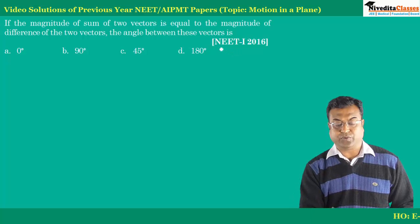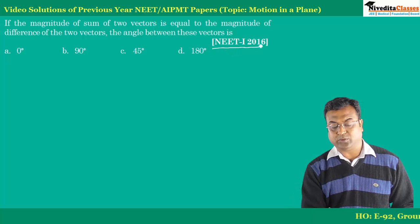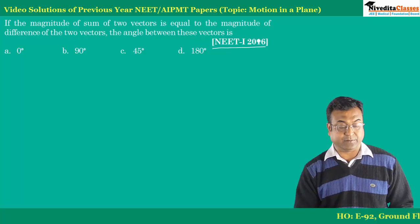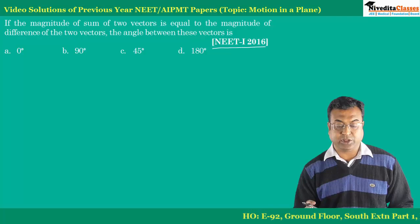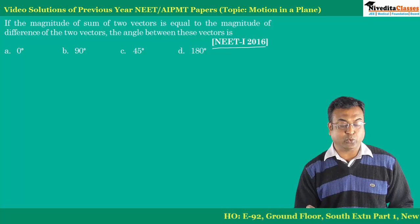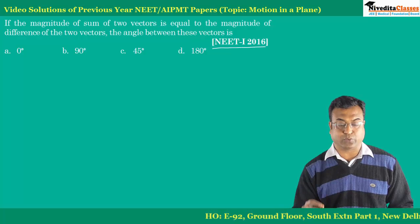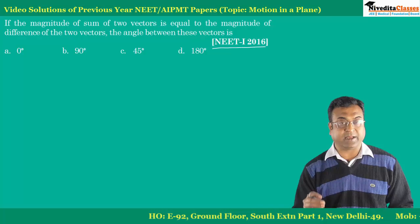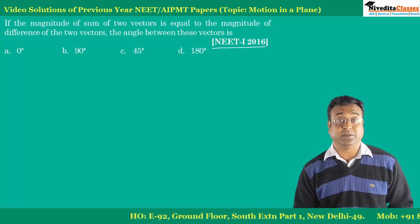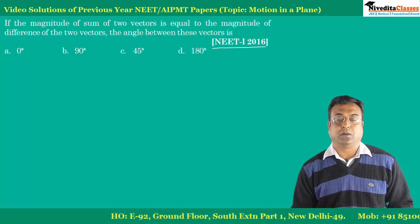This question was asked in NEET 2016. The question says: if the magnitude of the sum of two vectors is equal to the magnitude of the difference of two vectors, we have to find what the angle between these two vectors will be.